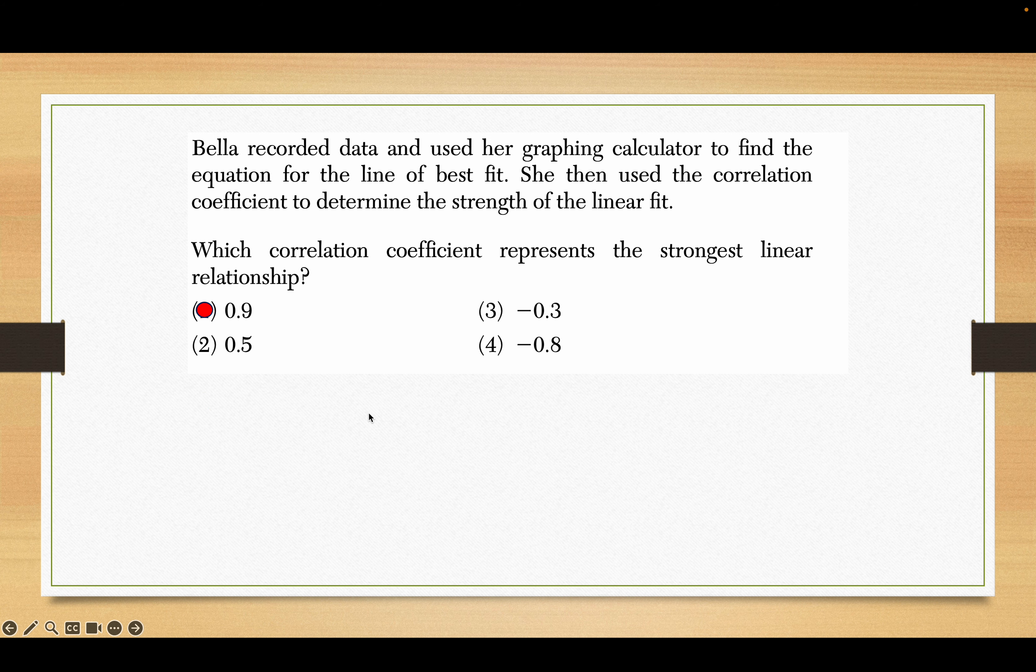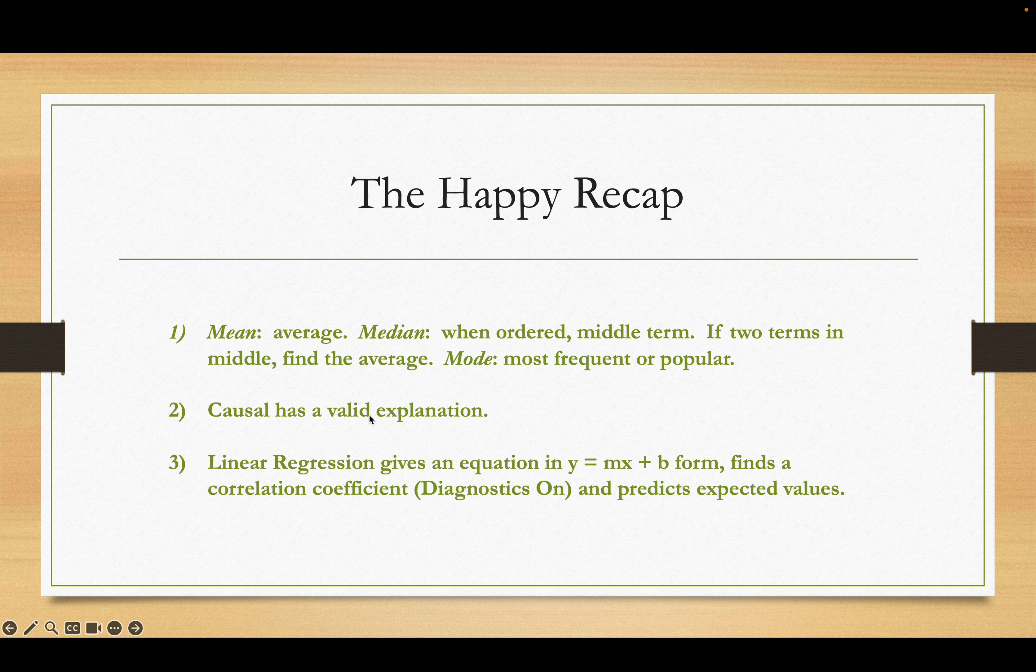Bell records data using a graphing calculator, finds the correlation coefficient. What's the strongest linear relationship? It's 0.9. Negative 0.8 is almost as strong, then 0.5, and negative 0.3 is the weakest. A little quick review here: the mean is the average, the median is the middle term, if there's two terms in the middle find the average. Mode is most frequent or popular. Remember mode is not in a box plot. Causal has a valid explanation linking the two, and linear regression gives an equation in y equals mx plus b form, but they say a instead of m.